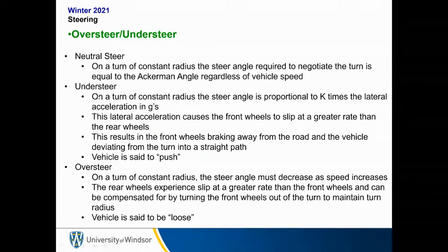Understeer: on a turn of constant radius, the steer angle is proportional to K times the lateral acceleration — you have to put in more steering the faster you are going. This lateral acceleration causes the front wheels to slip at a greater rate than the rear wheels, resulting in the front wheels breaking away from the road and the vehicle deviating from a turn into a straight path. You turn the wheel but keep going straight — the vehicle is said to push through a corner. This phenomenon is worse the faster you are going.